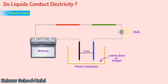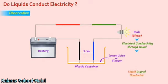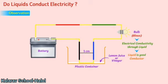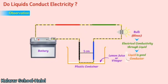Observation: The bulb glows as soon as the two ends are dipped in the liquid. This means that there is electrical conductivity through the liquid, which suggests that the liquid is a good conductor. This suggests that the liquid must be completing the circuit of the tester, due to which current must be flowing through the liquid, making it a good conductor.